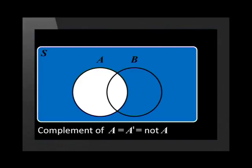Let me show you what a complementary event looks like on a Venn diagram. Remember, we denote the complement of A as A prime, or not A. The shaded region in the Venn diagram tells us we are looking for all outcomes not present in the event A.